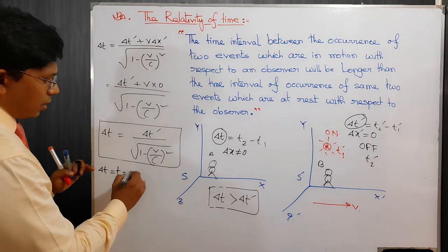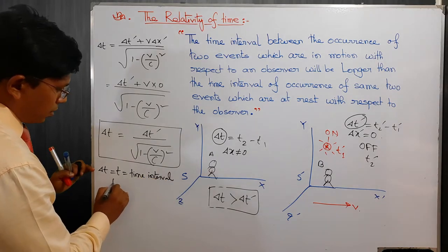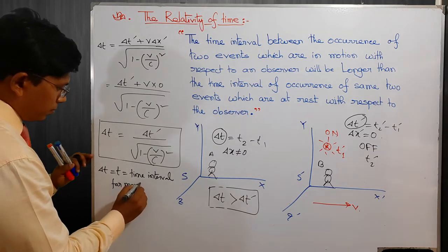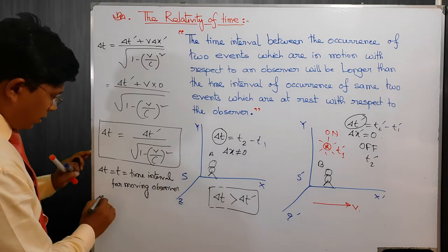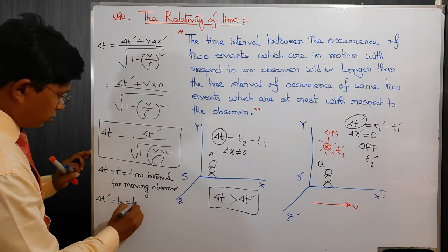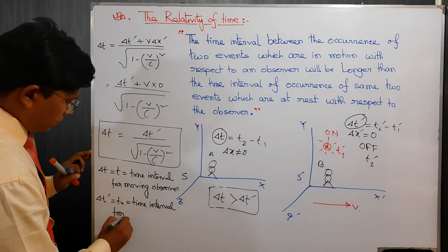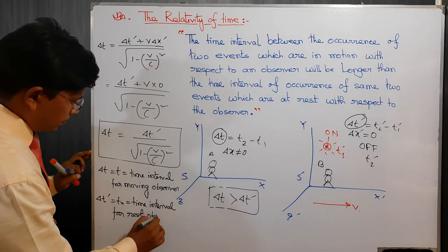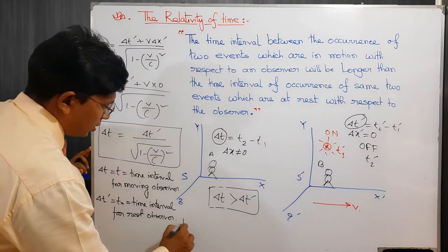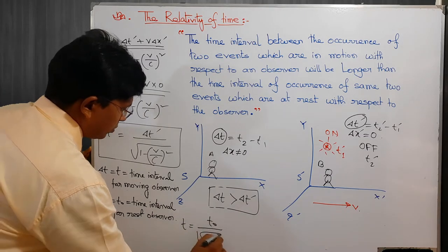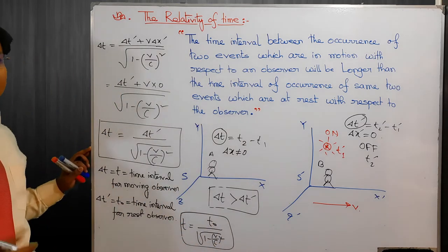What is the meaning of del-t and del-t-prime? Here, del-t equals t, which is the time interval for a moving observer. And del-t-prime equals t-naught, which is the time interval for a rest observer. So we can express the equation as: t equals t-naught divided by the square root of 1 minus (v/c) squared. This equation is also known as time dilation.